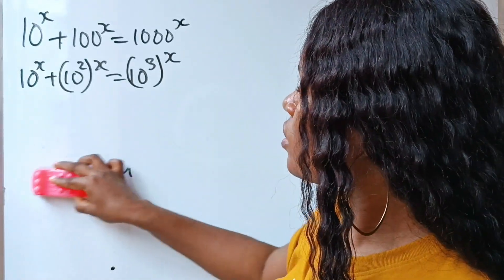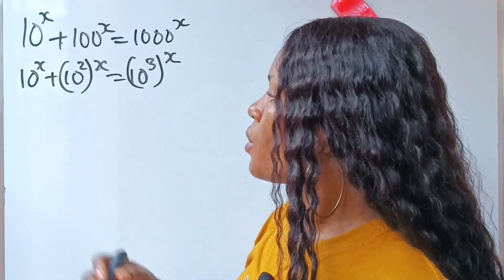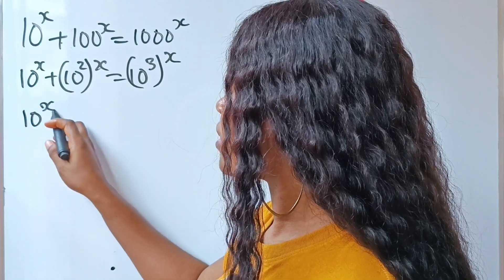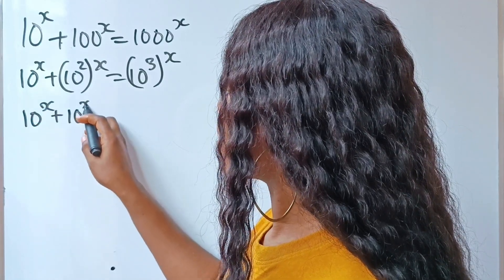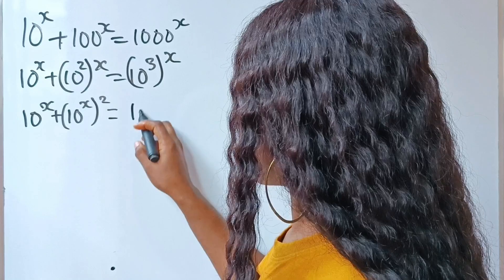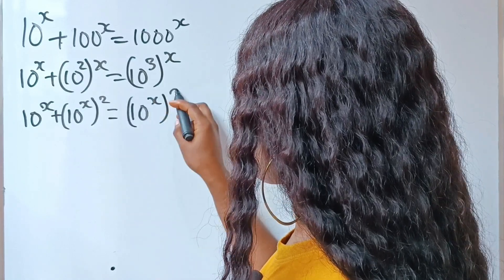So let's go ahead and do that. So if we do that here, we will have that 10 to the power of x plus 10x squared is equal to 10x to the power of 3.